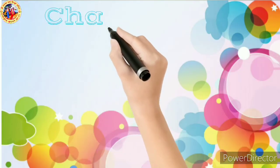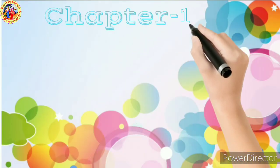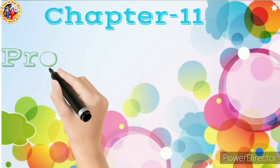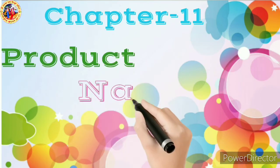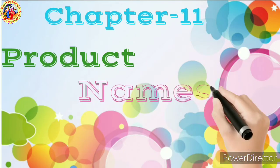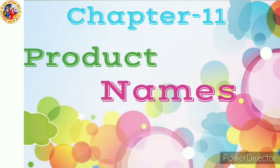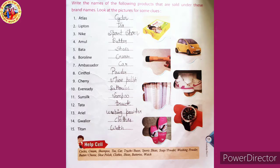Welcome to the contents of Class 3rd. Today we will read GK Chapter 11: Product Names. Write the names of the following products that are sold under these brand names. Look at the pictures for some clues.